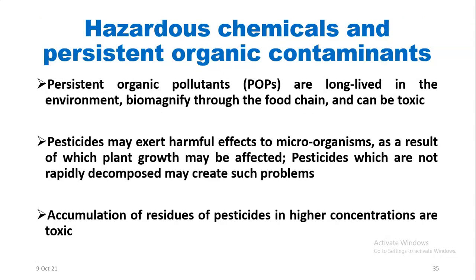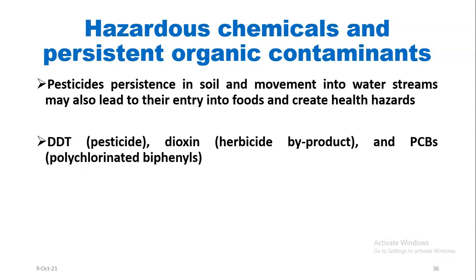Hazardous chemicals and persistent organic contaminants. Persistent organic pollutants are long-lived in the environment, biomagnified through the food chain, and can be toxic. Pesticides may exert harmful effects to microbes, as a result of which plant growth may be affected. Pesticides not rapidly decomposed may create such problems, and accumulation of residues at higher concentrations is toxic. Pesticide persistence in soil and movement into water streams may also lead to their entry into foods and create health hazards. Examples of hazardous chemicals and persistent organic contaminants include DDT, dioxin (a by-product of herbicide), and PCBs (polychlorinated biphenyls).